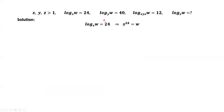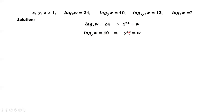This is the first given condition. Based on the definition of the log function, we have x to the power 24 equals w. Similarly, we have the following results for the second and third given conditions: log of w to the base y equals 40 implies y to the power 40 equals w; log of w to the base xyz equals 12 implies x times y times z to the power 12 equals w.